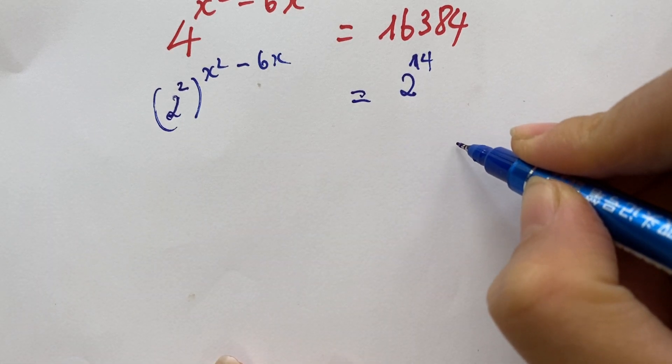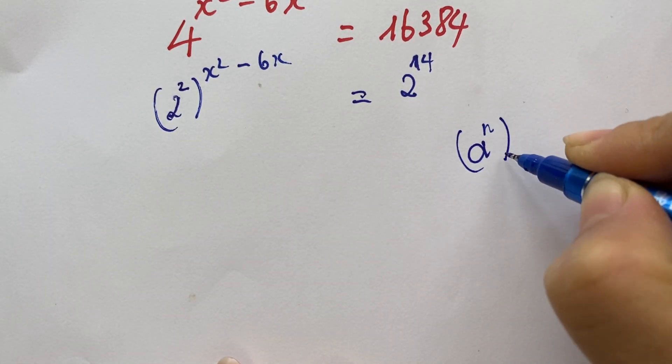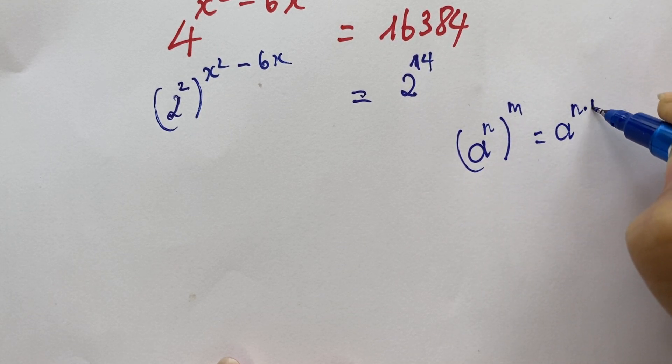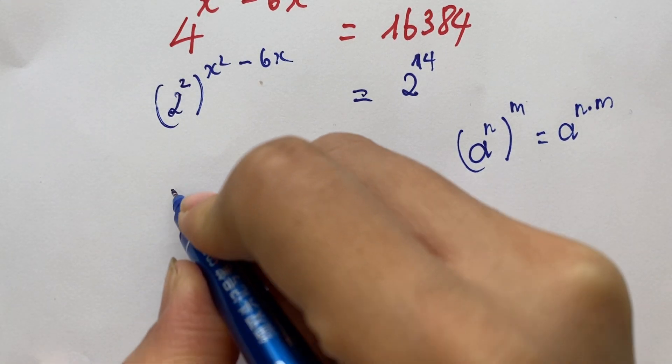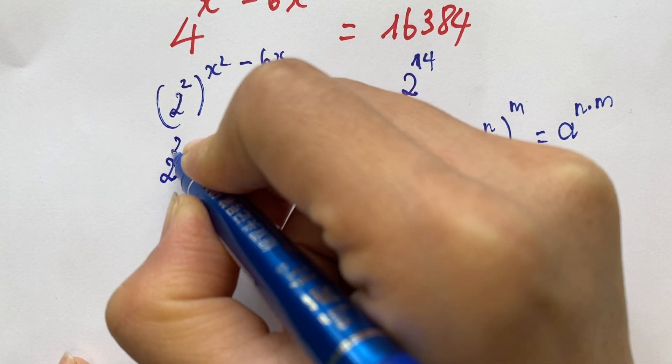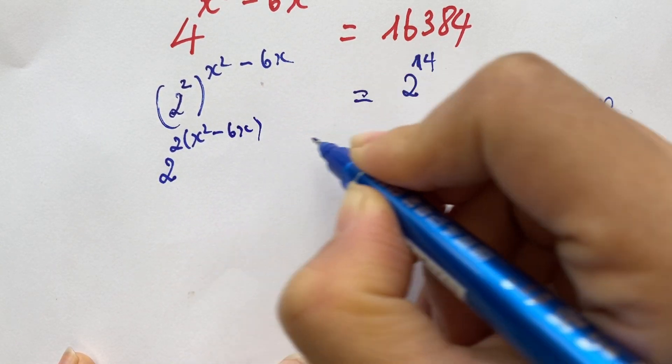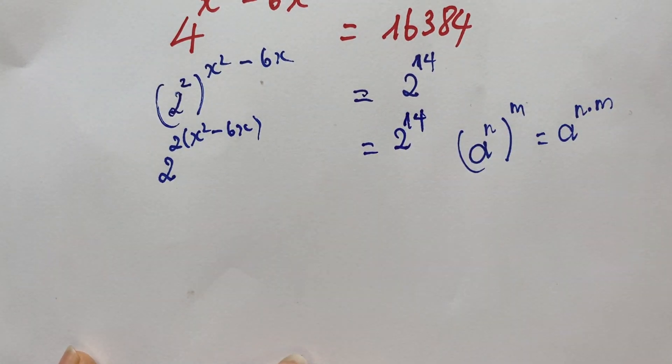Using the exponent rule a to the n to the m equals a to the n times m, you can rewrite this as 2 to the power 2x squared minus 6x equals 2 to the power 14.